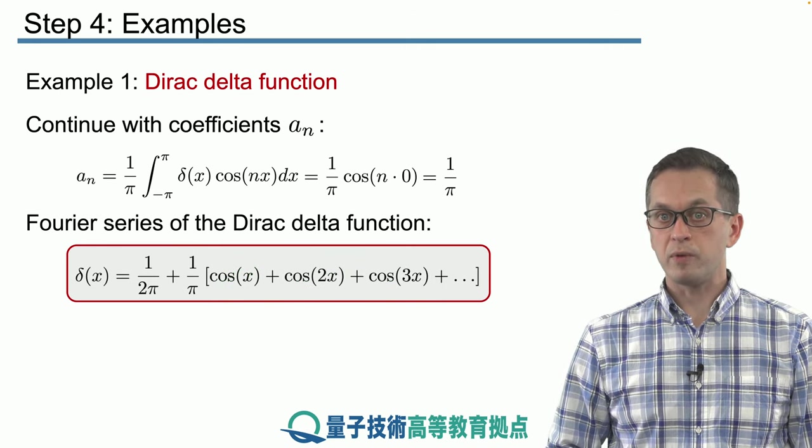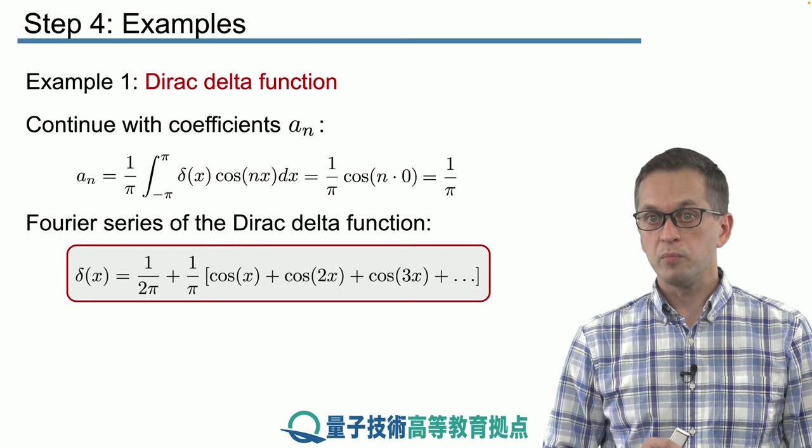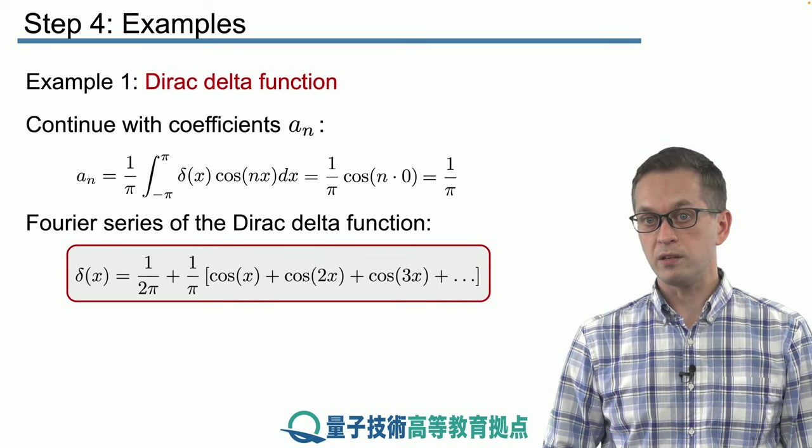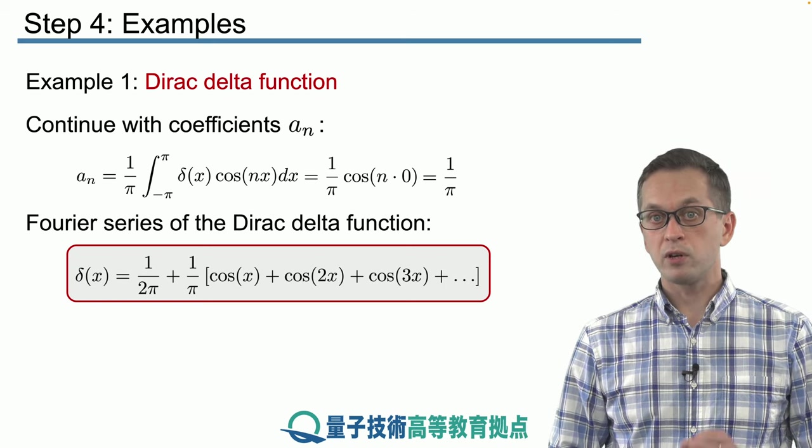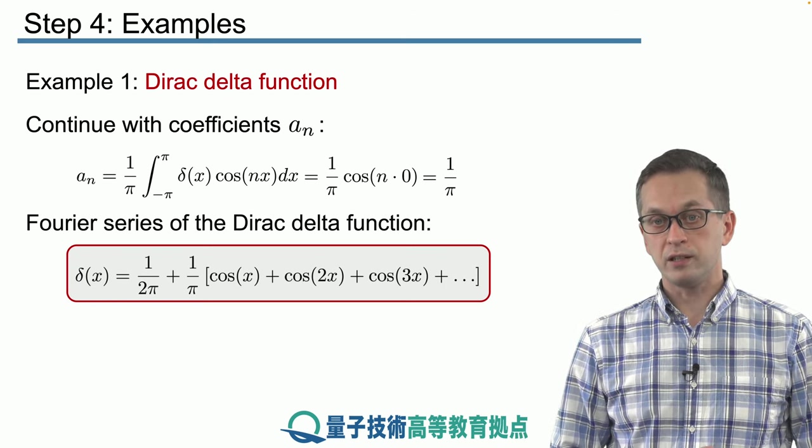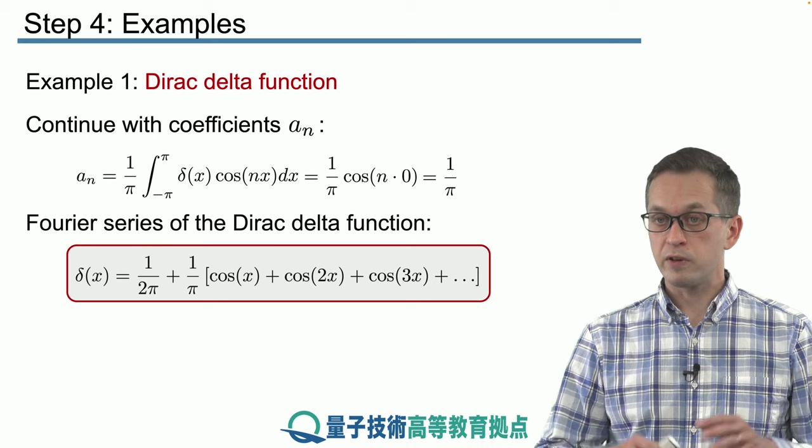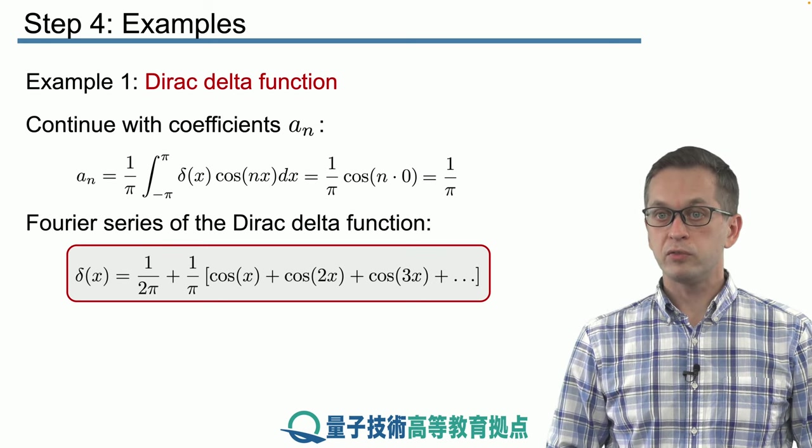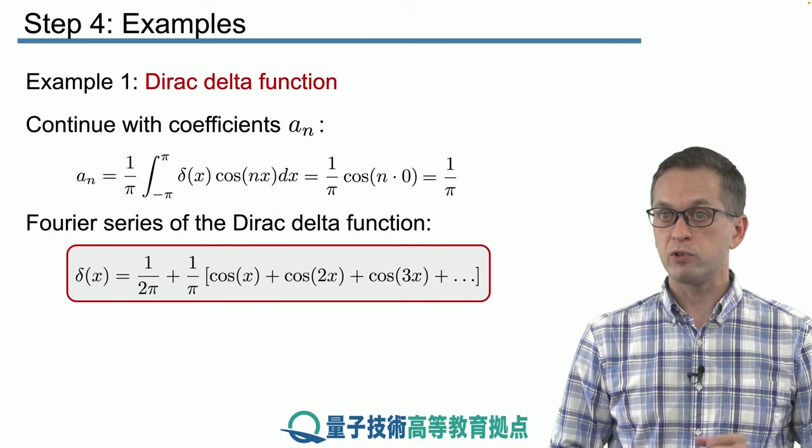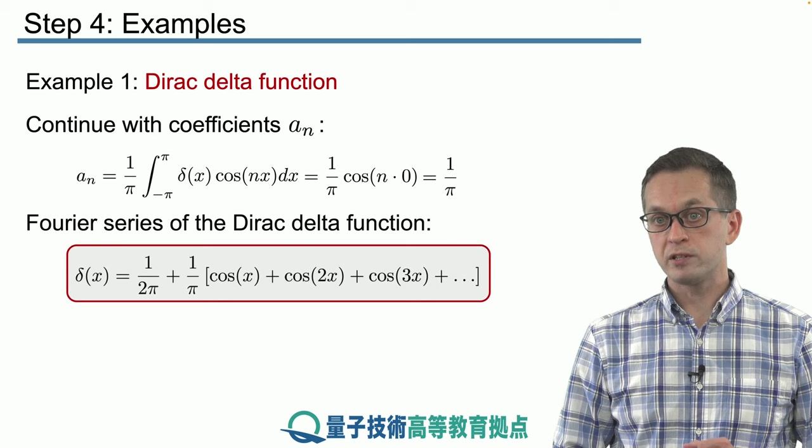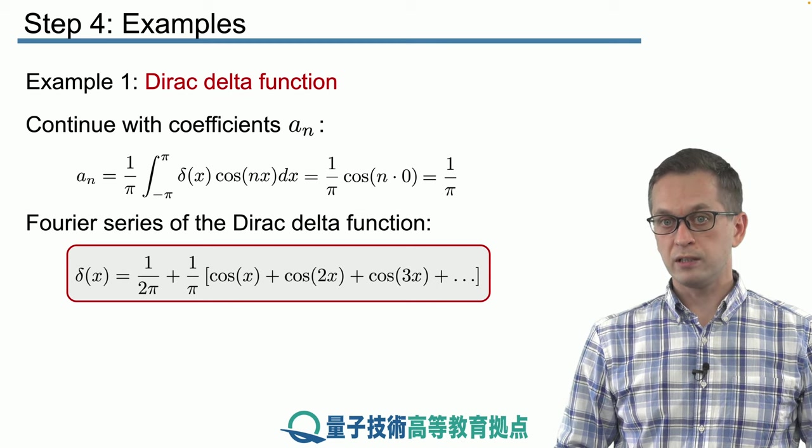There is one strange thing about this Fourier series, and that is that all of the an's, they are equal. Meaning all of the higher harmonics have the same weight. Meaning all of those higher harmonics are equally important to reproduce the Dirac delta function. Often this is not true when we talk about smooth functions. Usually there's only very few frequencies that are important to reliably reproduce the function in terms of its Fourier series, and all of the higher or the lower harmonics are not so important.